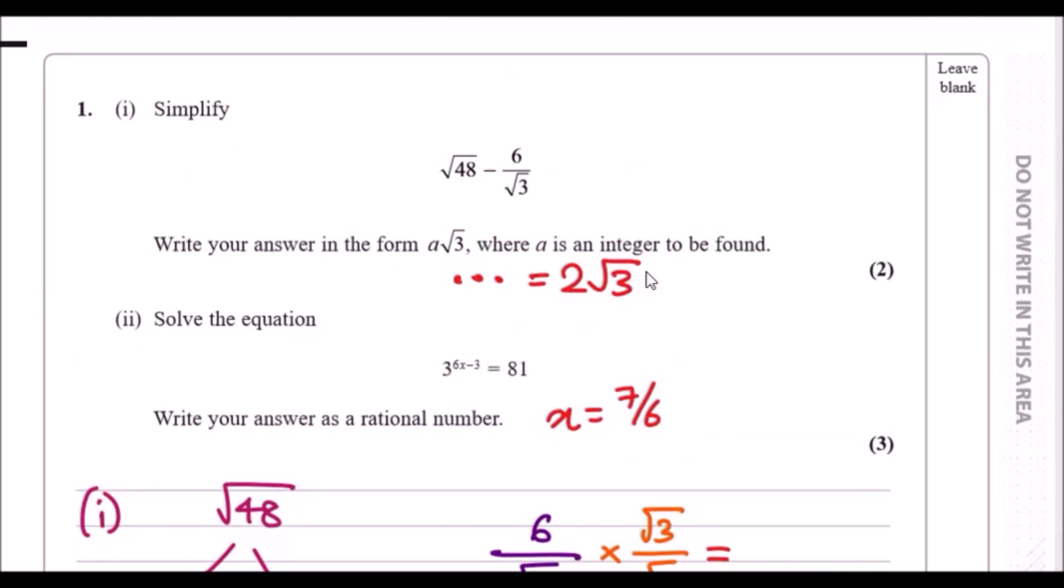Number one: simplify the square root of 48 minus 6 over root 3. Write your answer in the form a root 3 where a is an integer to be found. I've already obtained the answer here, but the key idea is to break down each of these two components. First we're going to break down root 48 and then 6 over root 3 and simplify these both.